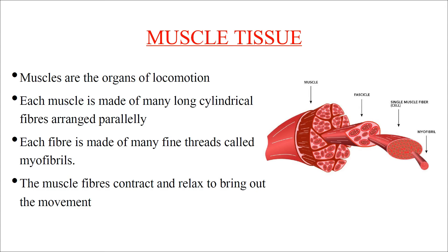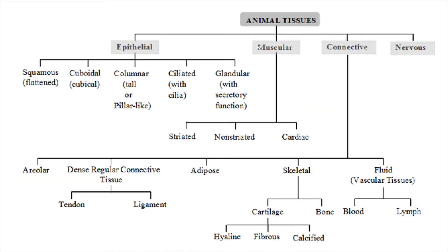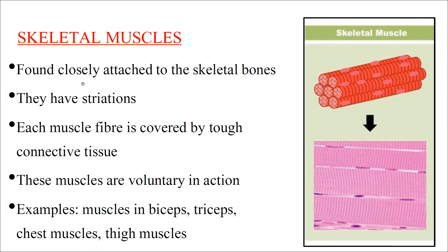Muscles are the organs of locomotion. Each muscle is made up of many long cylindrical fibers arranged parallel to each other, and these fibers are made up of fine threads called myofibrils. Muscle fibers contract and relax to bring about movement. Muscular tissue is classified into striated, non-striated, and cardiac muscles. Striated or skeletal muscles are attached to skeletal bones, have striations, are covered by tough connective tissue, and are voluntary in action. Examples include bicep, tricep, chest, and thigh muscles.